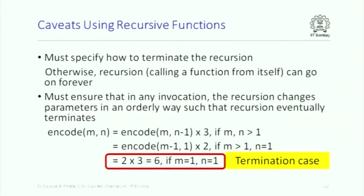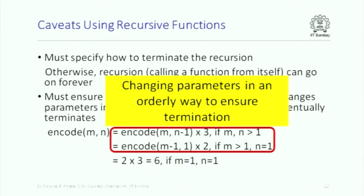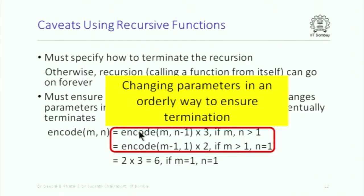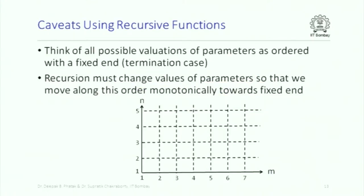The termination case is when m = 1 and n = 1, returning 6. The parameters must move towards 1 monotonically — only when both are 1 do you exit. One recursive call uses n-1, another uses m-1. When one parameter reaches 1, the other begins to reduce. Think of recursion as requiring that parameter values move monotonically along a given order toward the termination case.